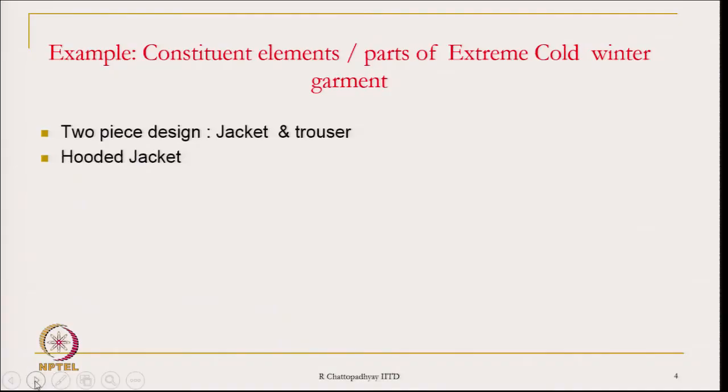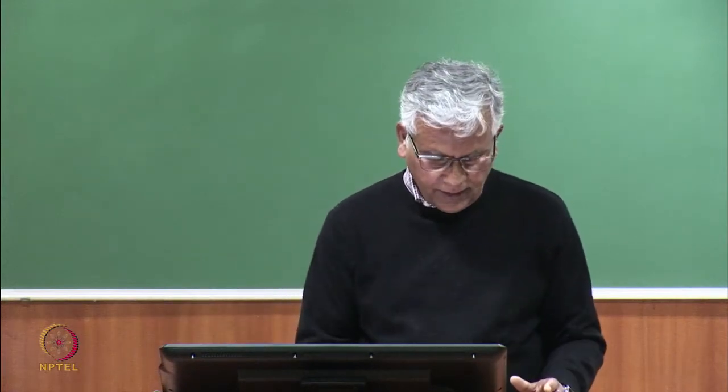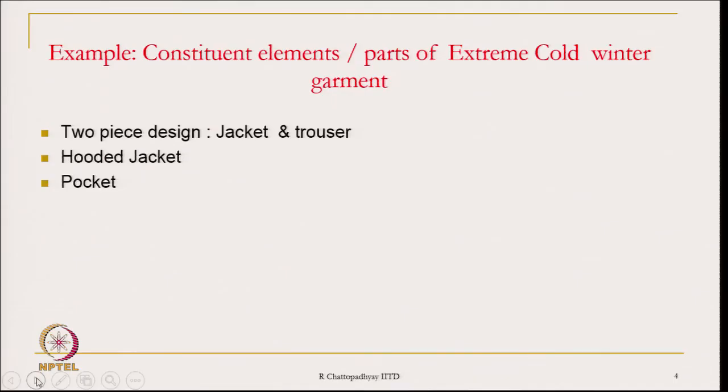It could be a two-piece design — that is, there is a jacket and there has to be a trouser. The first constituent elements are the upper part and the lower part which will cover our body. Next, the jacket should be hooded, so the hood is also part of the jacket so that the head remains covered. The other thing we will need is pockets, which are used to keep utility items, so it must have pockets.